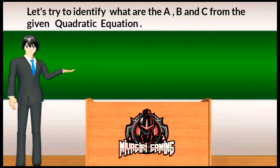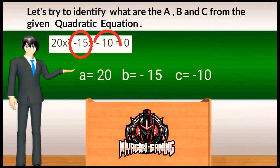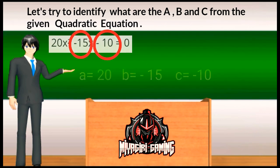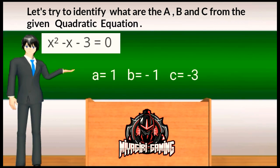Let's try to identify what are a, b, and c from the given quadratic equations. For 20x squared minus 15x minus 10 equals 0, the value of a is 20, b is negative 15, and c is negative 10. Next, for x squared minus x minus 3 equals 0, always remember the numerical coefficient of the variable is always 1. So the value of a is 1, b is negative 1, and c is negative 3.